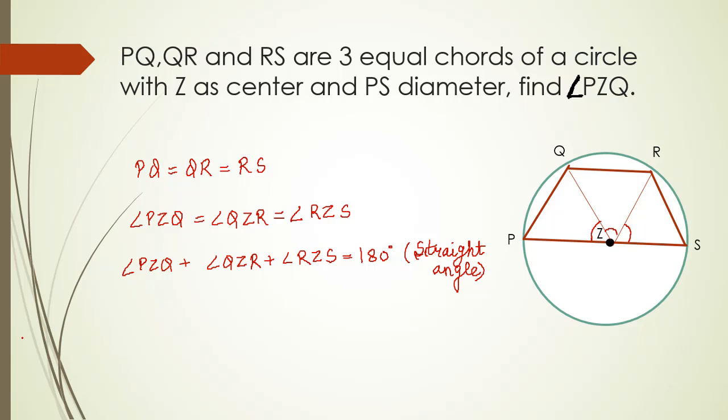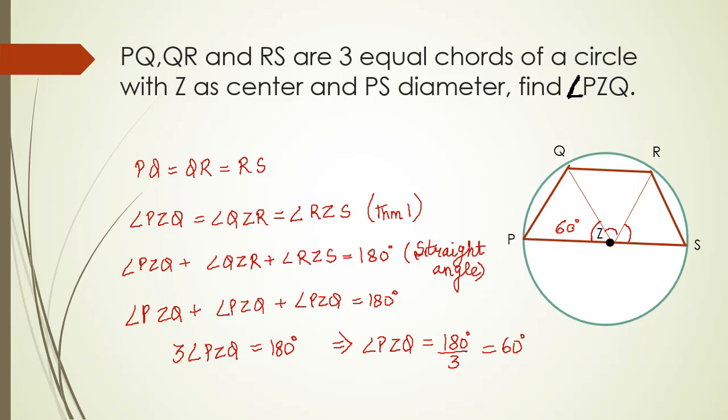It is very important to write reasons for every step you do. With this statement you must write the statement of the theorem that we have just discussed. I am writing only in short form, that is theorem 1. Since all these angles are equal, I can put the values of all these angles to be angle PZQ. So I get 3 times angle PZQ is equal to 180 degrees, which implies angle PZQ is 180 divided by 3, which is 60 degrees. So this is the answer. One angle measures 60 degrees, and all these angles are equal, so the measure of all these angles is 60 degrees. I hope you solved this question right.